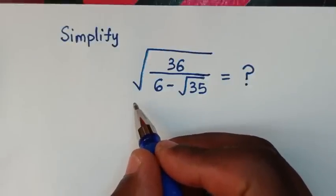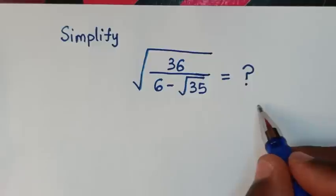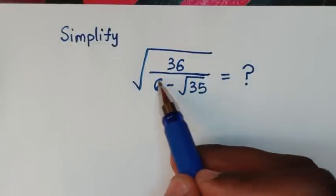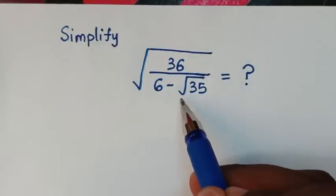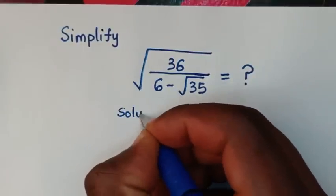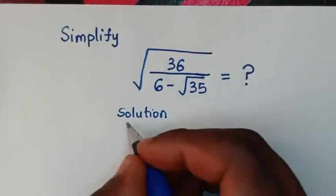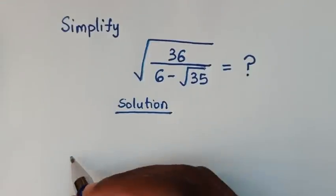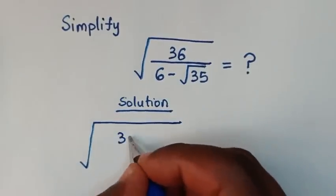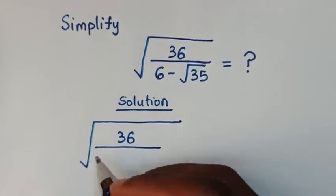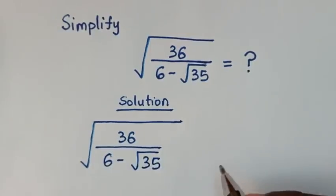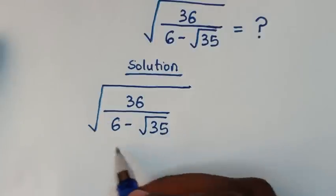Hello, you are welcome to solve this math problem: simplify square root of 36 over 6 minus square root of 35. Now, solution. From the problem, which is square root of 36 over 6 minus square root of 35, in the first step we rationalize this denominator here.